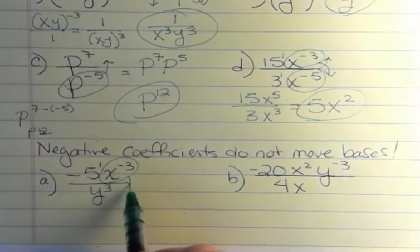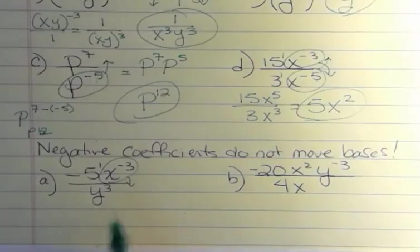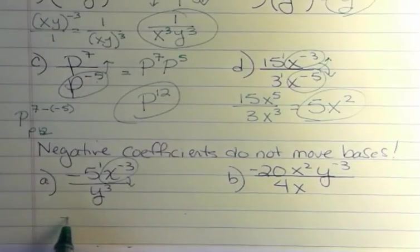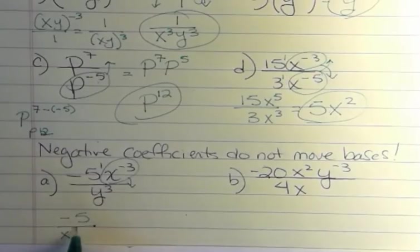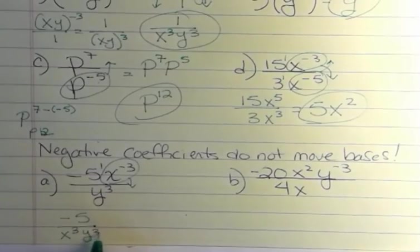If I wanted to simplify this to get rid of the negatives, I would just move that one term. And I would have negative 5 still on the top. And I would have x to the positive 3 and y to the positive 3.